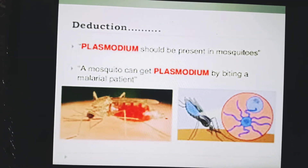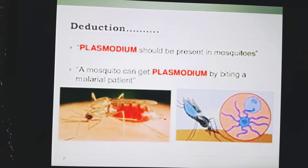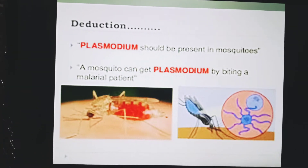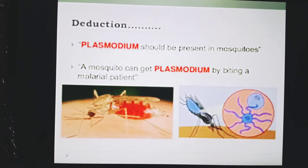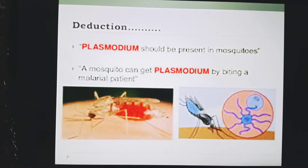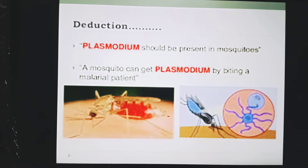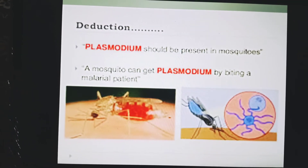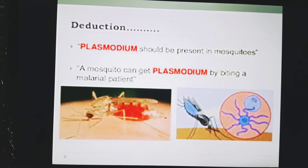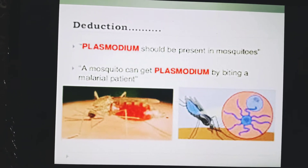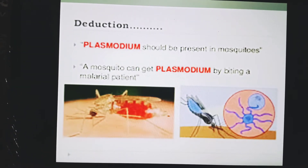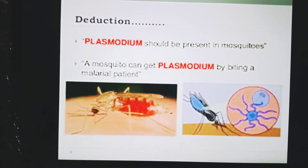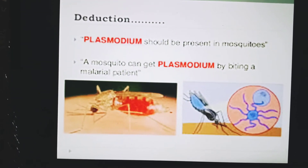The following deductions were made considering the hypothesis: if mosquitoes are involved in the spread of malaria, then plasmodium should be present in mosquitoes, and a mosquito can get plasmodium by biting a malarial patient.